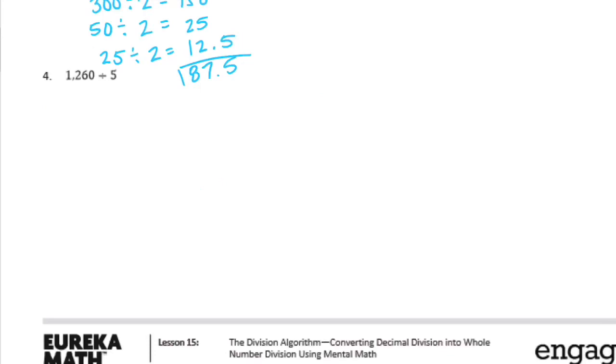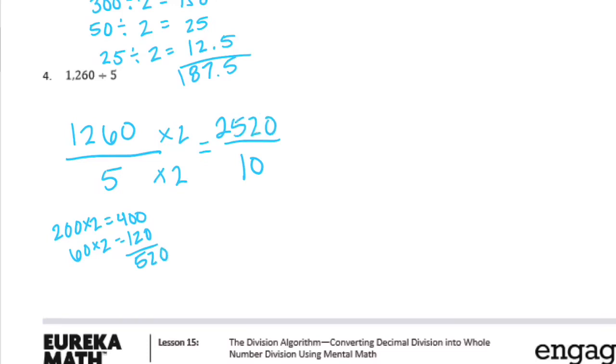Number 4. 1,260 divided by 5. So I'm going to make 5 into 10, which means I need to multiply them both by 2. 1,260 times 2 would be 2,520. And if I divide by 10, I get 252.